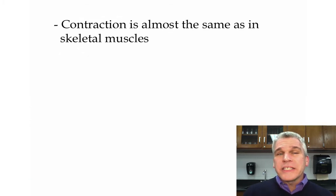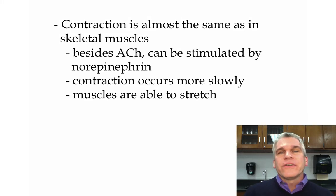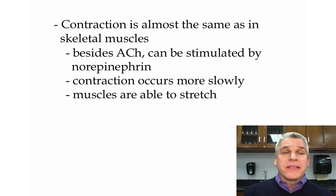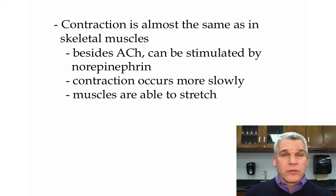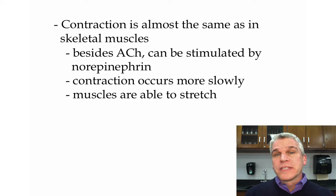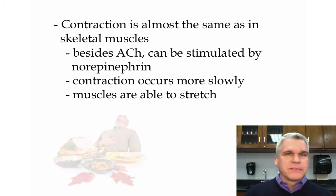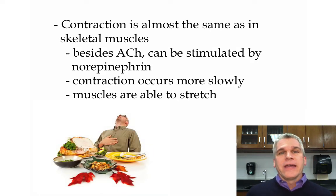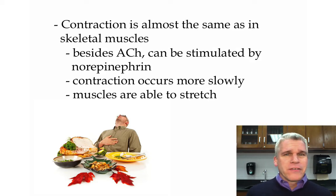How contraction works is basically the same as in skeletal muscles — that whole sliding filament theory applies. One difference, though, is that in skeletal muscle, acetylcholine is needed, but in smooth muscle, it can also use the neurotransmitter norepinephrine as well. The whole contraction process occurs much more slowly, so it's not measured in milliseconds like we did with skeletal muscle. Another big difference is that smooth muscle is able to stretch — you might experience this on Thanksgiving Day, where you overeat and your stomach expands.